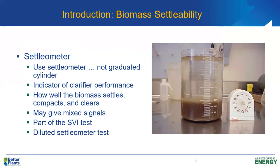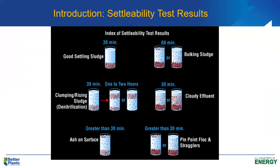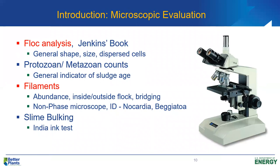If we do the diluted settleometer test and the sludge settles much better, that typically means we just have a glutted system — which is what that plant had. The sludge settled to about 250 mL/L with the diluted test, confirming they were running too high mixed liquor suspended solids and just needed to waste more sludge. On the other hand, if we do the diluted settleometer and the sludge doesn't settle better, that is usually an indication that we have filamentous bulking in our process.